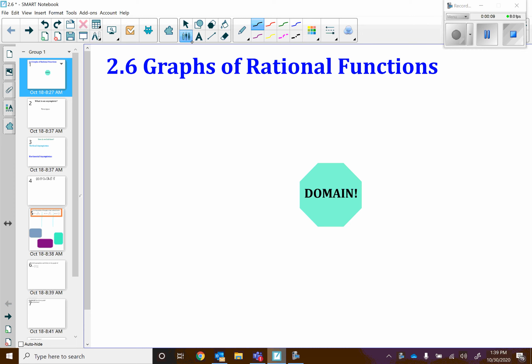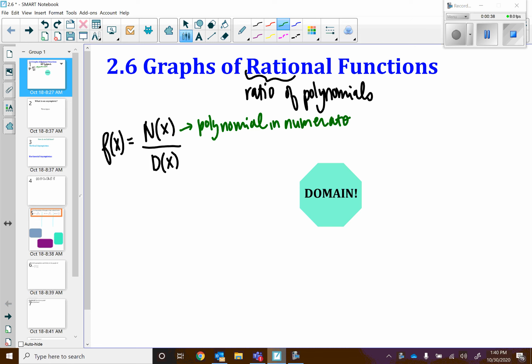So rational functions are a ratio of polynomials. A rational function, f of x, will have a numerator function and a denominator function, and both of those are polynomials. This is a polynomial that's in the numerator, that's why I put it as n of x, and this is a polynomial in the denominator.